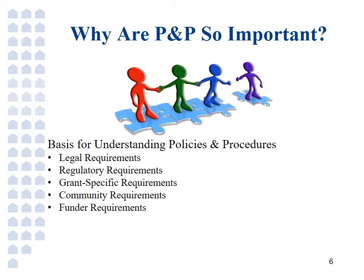Grant-specific requirements are, as the name indicates, requirements that only apply narrowly to certain grants or funding streams. For example, different federal grants have different record retention requirements, a fact that an agency with multiple funding streams should be aware of. Cincinnati is unique in that it has several required policies and procedures specific to the community. The COC board has the authority to require agencies to maintain and adhere to certain policies and procedures as part of their participation in the continuum of care. Lastly, some requirements are specific only to the funder, and are typically set forth in grant agreements. The City of Cincinnati, for example, sets forth in its ESG agreement with Strategies that certain forms of insurance are required to be carried by recipients and subrecipients. Strategies passes these requirements along to its subrecipients in its own subawards.